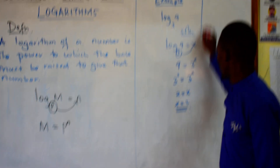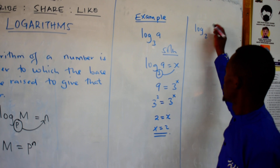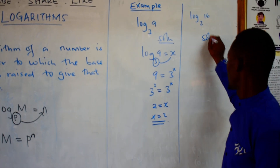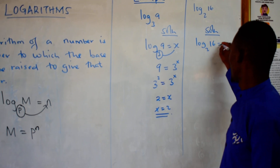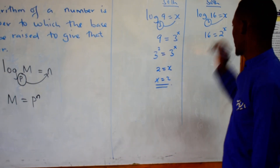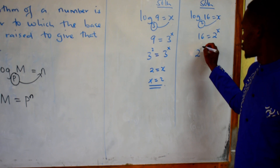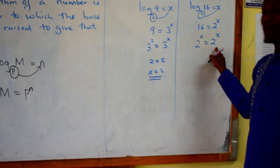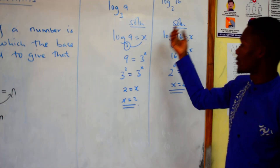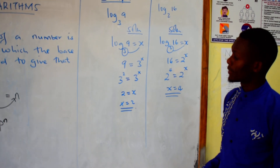Another example: the log of 16 to base 2. To what power do you raise 2 to get 16? Again, we let log₂(16) equal x, so 16 equals 2^x. Now 16 can be written as 2 to the power 4, which is the same as 2^x. Since the bases are the same, the powers must be equal. So generally, when we are working with logarithms, we are finding powers.